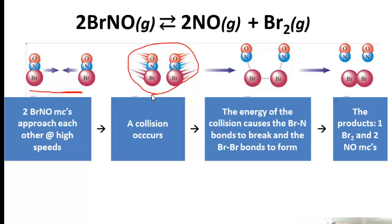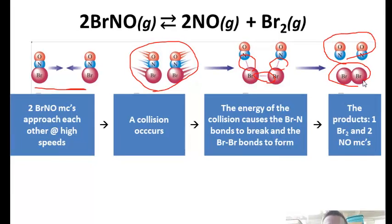So what happens when they collide, the energy from that collision causes the bromine-nitrogen bonds to break. So you see here the bonds between the nitrogen and the bromine are breaking on each of those separate atoms. And then we're also forming bonds between the two bromines. So here we see a bond forming as well. And then the last part are the products of the reaction. So you end up with two nitrogen monoxides and one Br2 molecule.